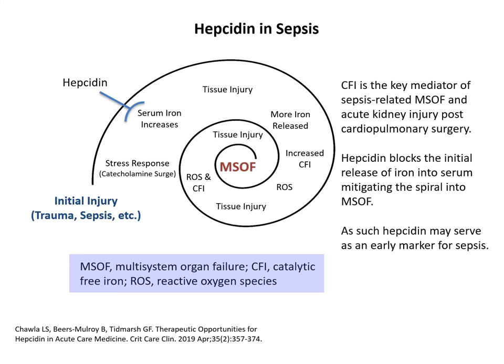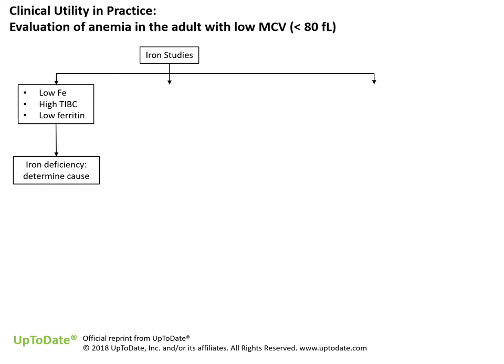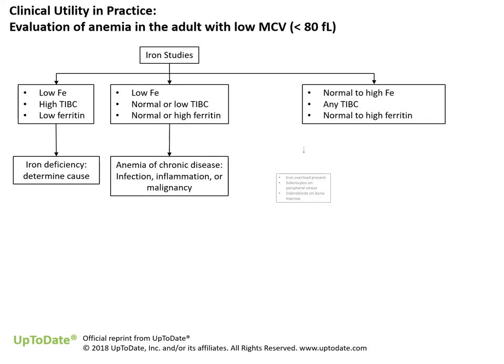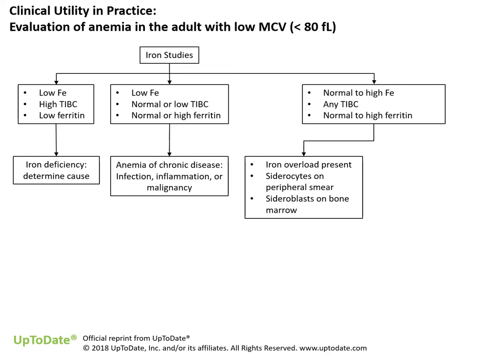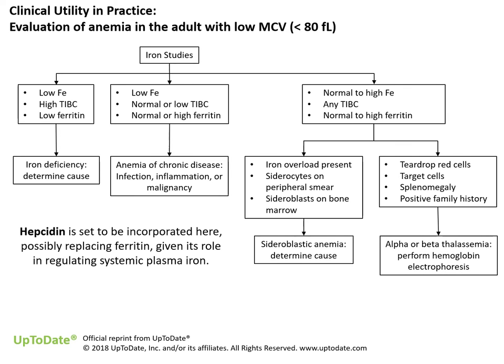With hepcidin's role in sequestering iron in conditions of inflammation and iron overload, it may serve as an early acute phase marker of sepsis. A clinical utility in practice can be summarized with an assessment of normocytic or microcytic anemia. Low iron, high TIBC (total iron binding content), and low ferritin is predictive of iron deficiency. Low iron with normal or low TIBC and normal-to-high ferritin yields a diagnosis of anemia of chronic disease. Normal-to-high iron with any TIBC and normal-to-high ferritin may indicate iron overload (e.g., sideroblastic anemia) or, if teardrop-shaped red blood cells or splenomegaly is present, thalassemia. Hepcidin is being evaluated for incorporation into the diagnostic tree and may replace ferritin altogether.